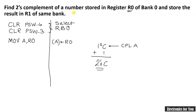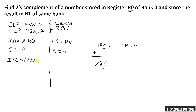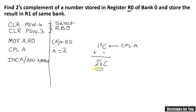R0 is holding the number whose two's complement is to be found. To get the two's complement, we use CPL A — that is, A equals the complement of A. Then 1 must be added. Two instructions are available: the simple INC A, which increments the accumulator, or ADD A, #01H. Once 1 is added to the one's complement, we get the two's complement.